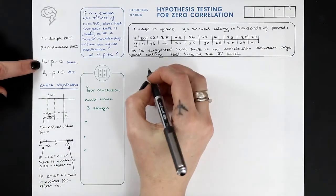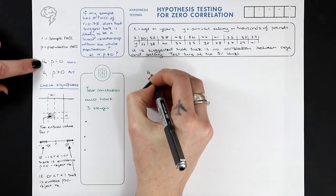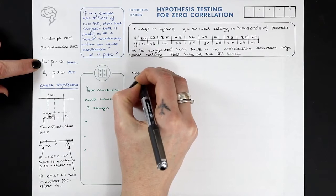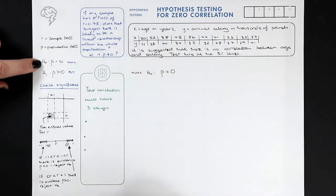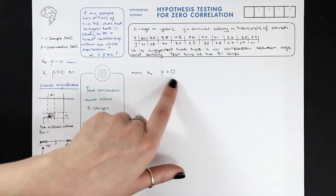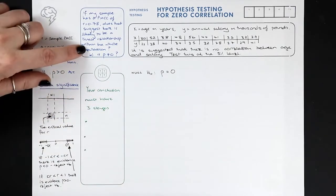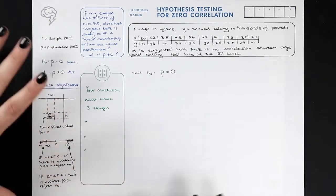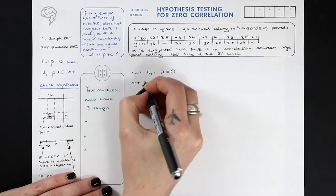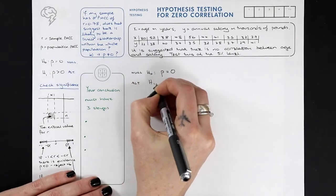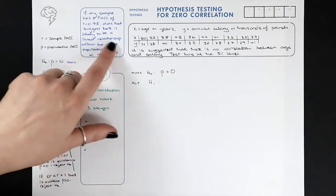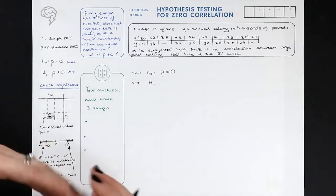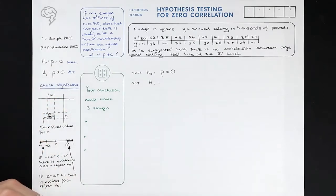The null hypothesis is always that there isn't anything interesting going on: rho equals zero, there is no linear correlation in the whole population. The alternative hypothesis is that there is some linear relationship between the two variables in the whole population.